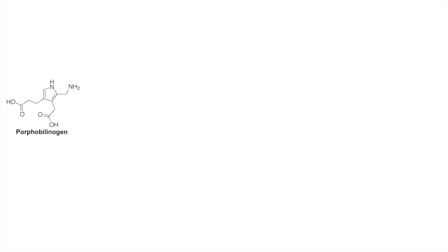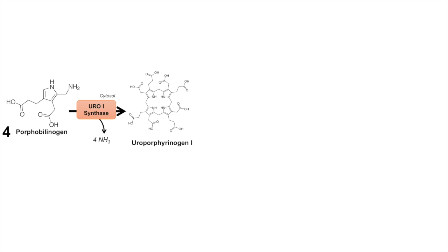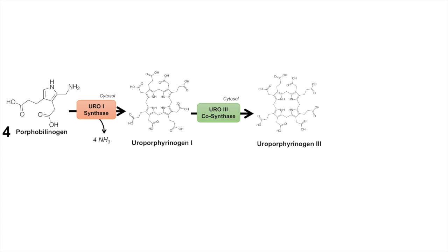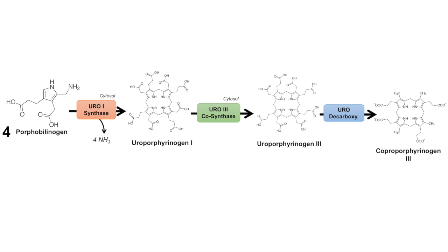Once we have porphobilinogen, it takes four porphobilinogen molecules to move on to the next step. The enzyme uroporphyrinogen-1 synthase takes these four porphobilinogen molecules and, in the cytosol, releases four ammonia to produce uroporphyrinogen-1. Uroporphyrinogen-1 is then processed by uroporphyrinogen-3 cosynthase, also in the cytosol, into uroporphyrinogen-3. Uroporphyrinogen-3 then undergoes a reaction with uroporphyrinogen decarboxylase to produce coproporphyrinogen-3.